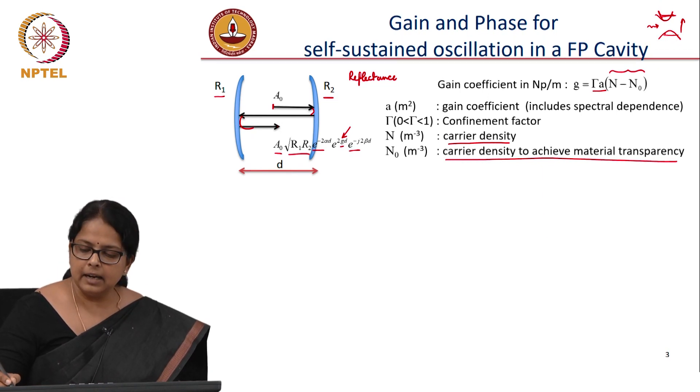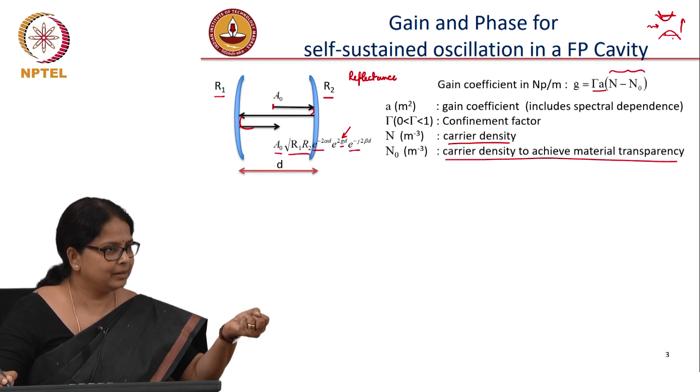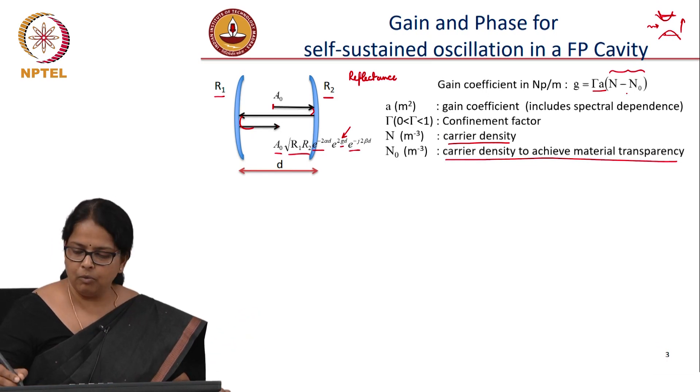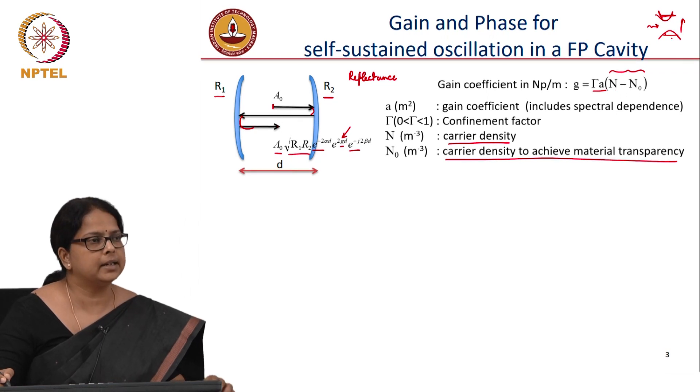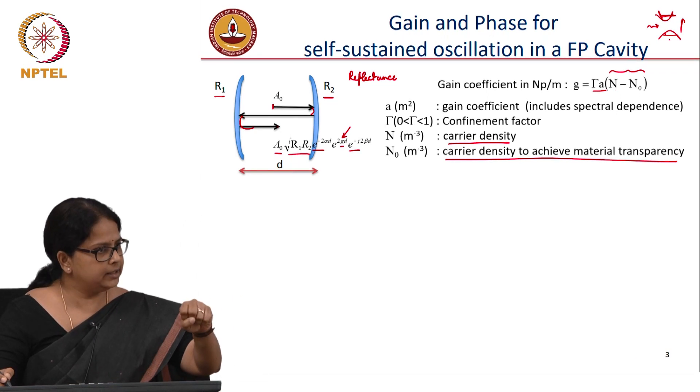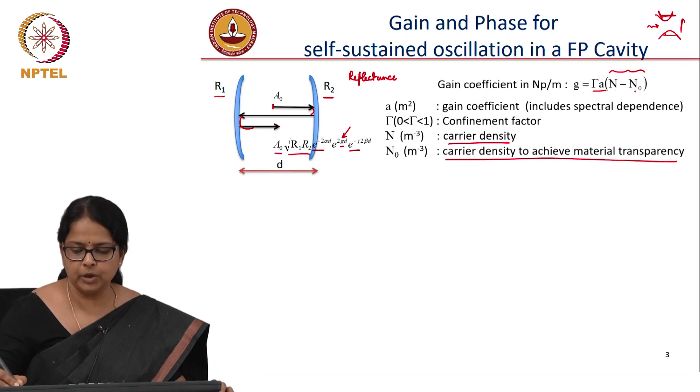If the carrier density is larger in the lower state, the probability of absorption is more. And so what it depends on is N minus N naught, where N naught is a carrier density that is required to achieve transparency. Transparency is a condition where all the incident photons are coming out at the same number. There is no absorption. There is a no absorption condition.